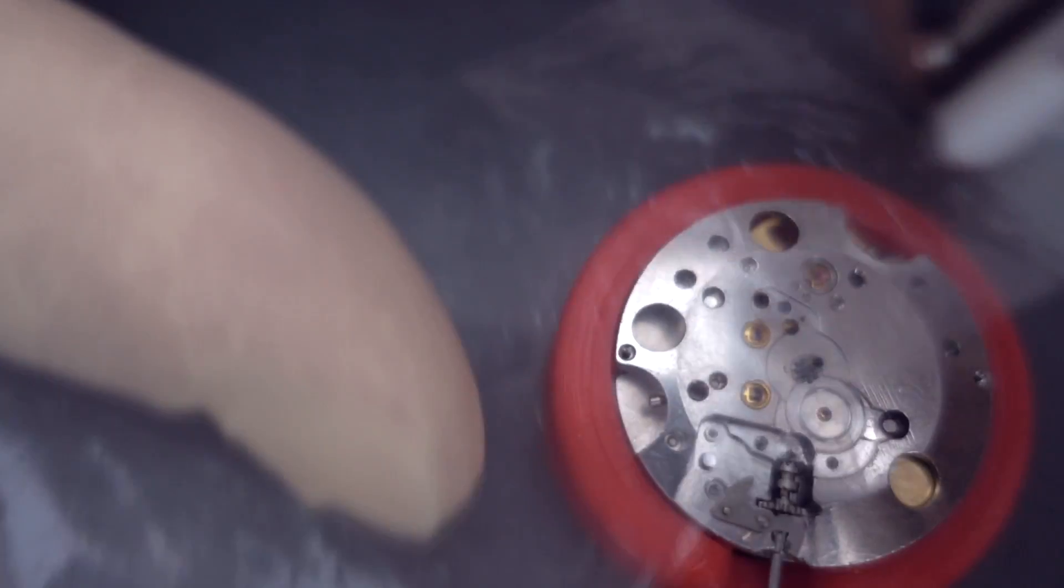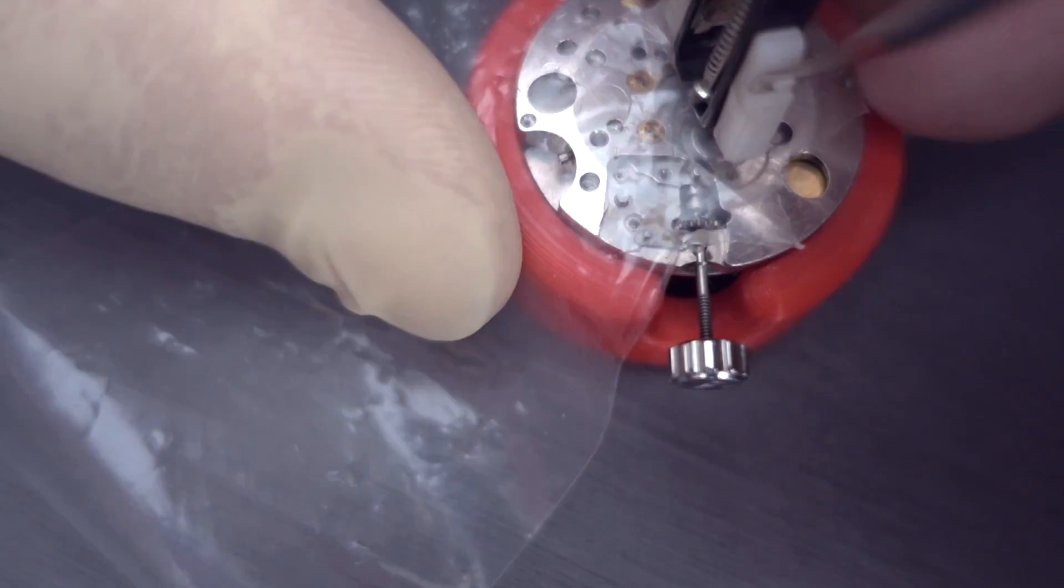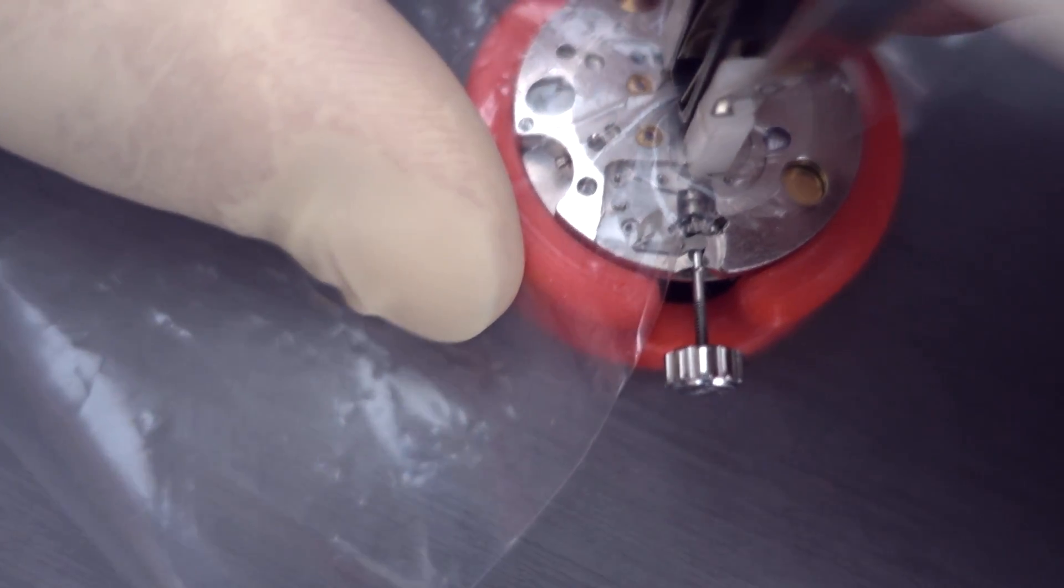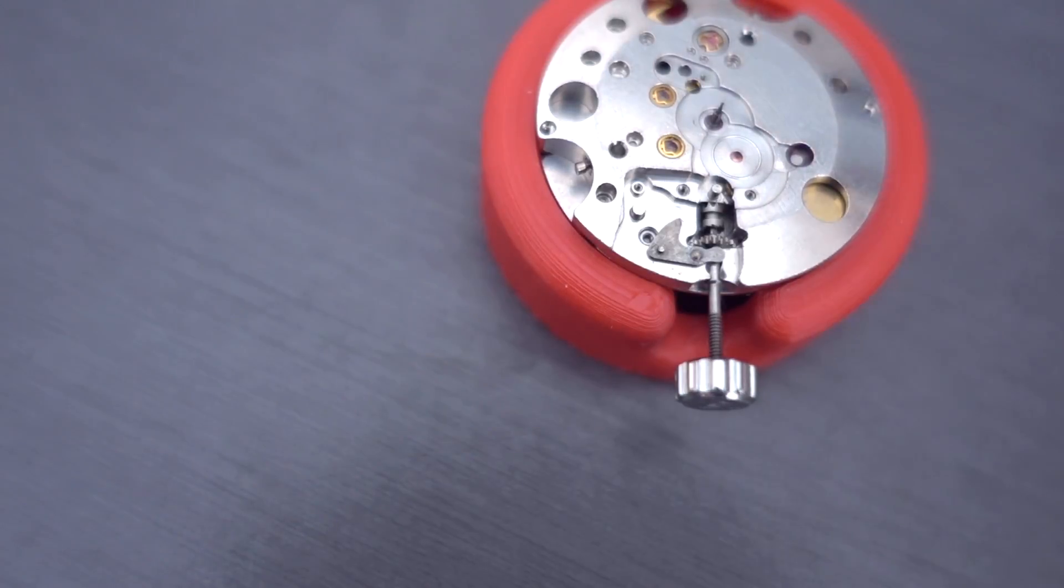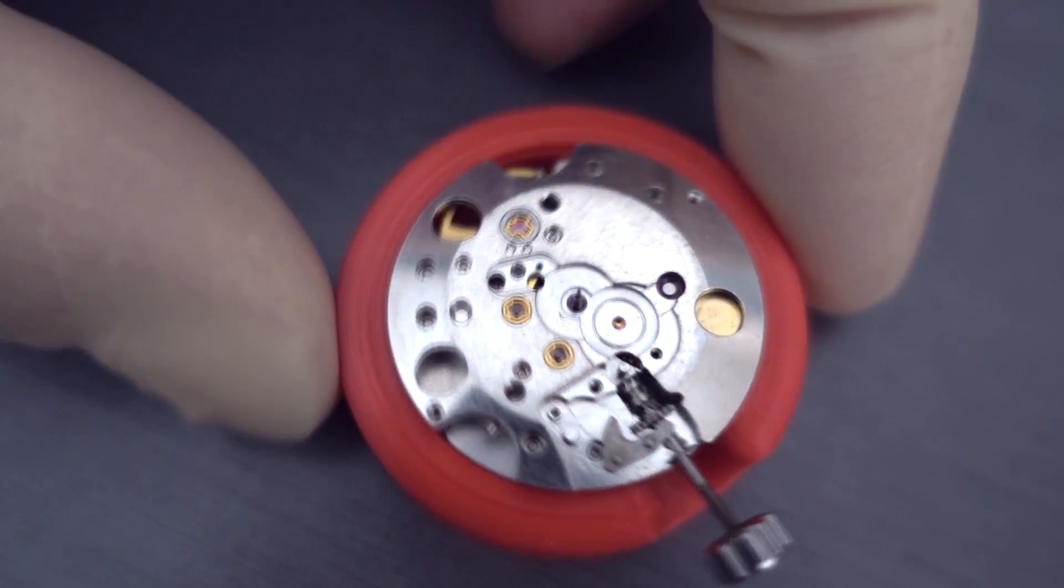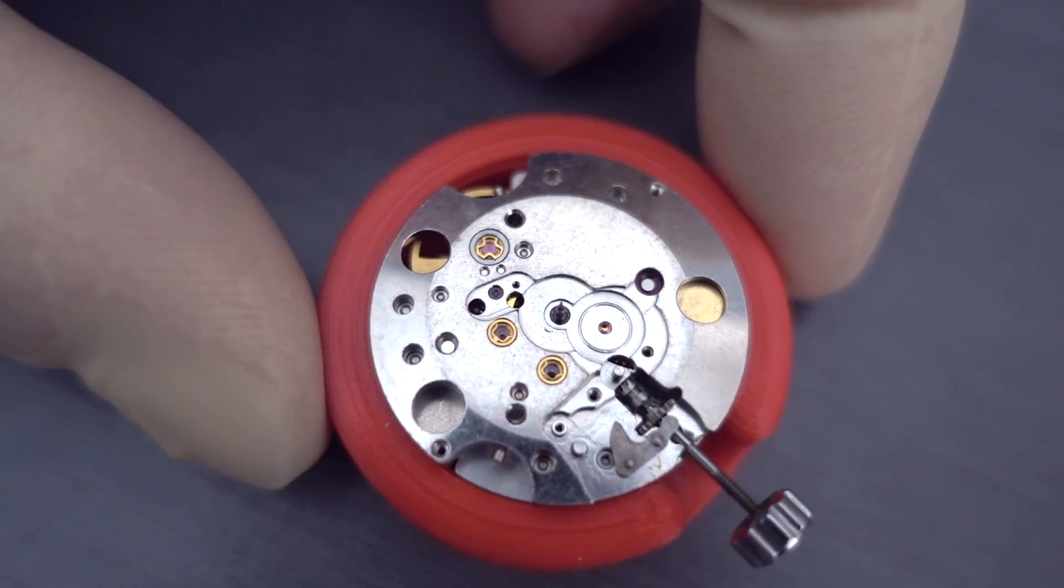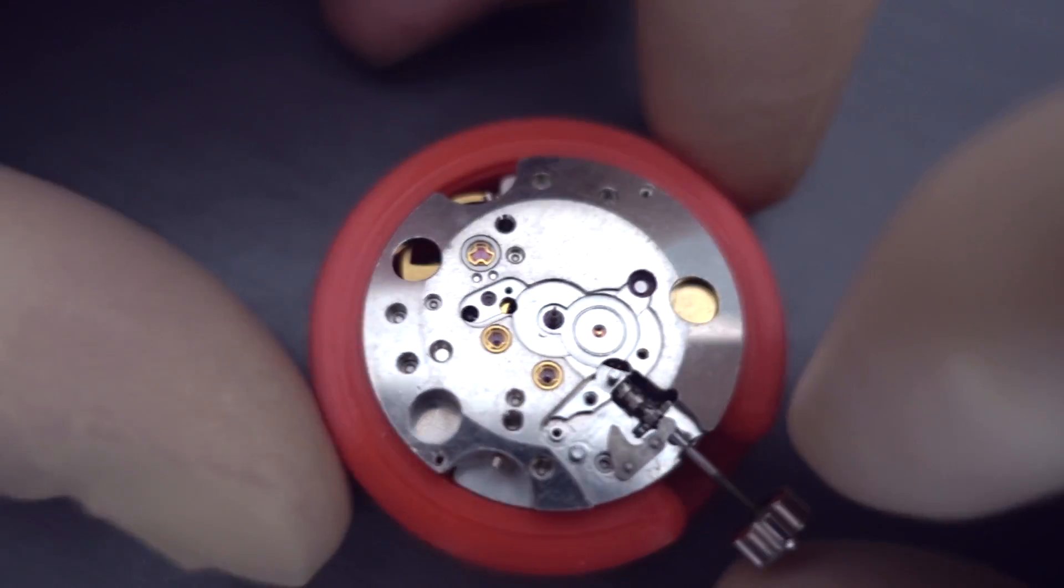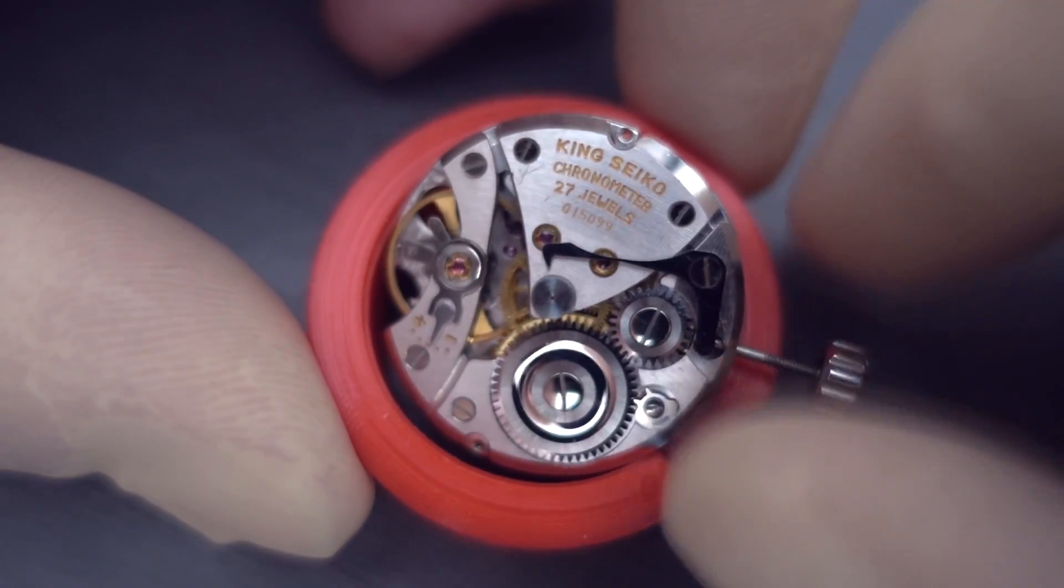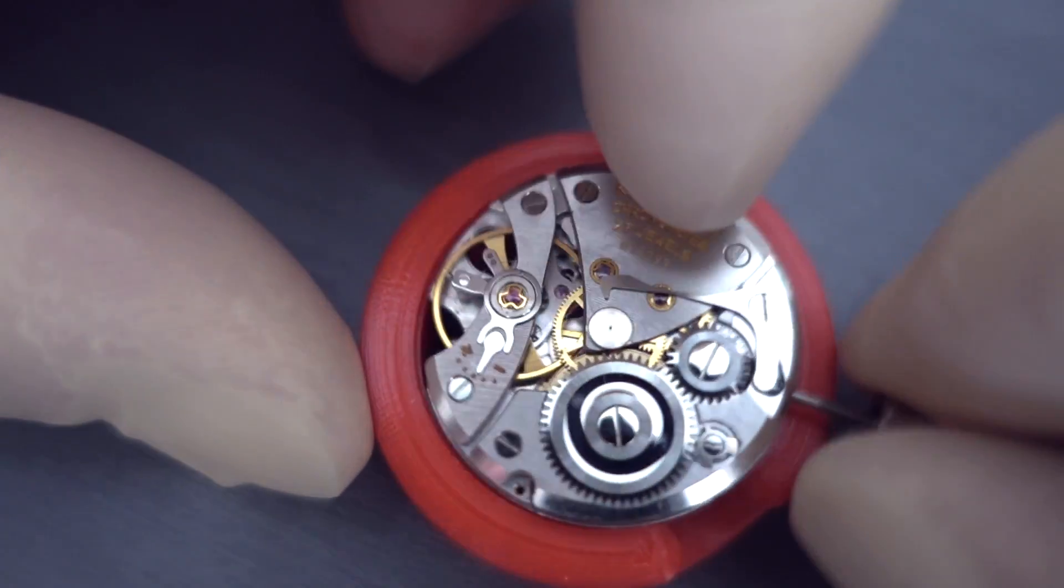Now I'm just going to remove the canon pinion. I'm not going to remove the diafix or the dia shock settings on camera because it's just way too difficult. And we're going to turn it over and we're going to see the train side there.